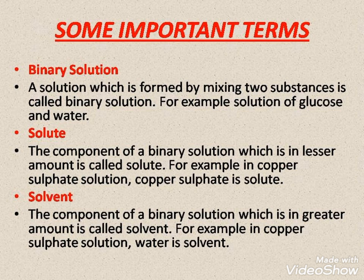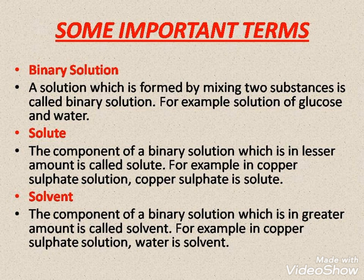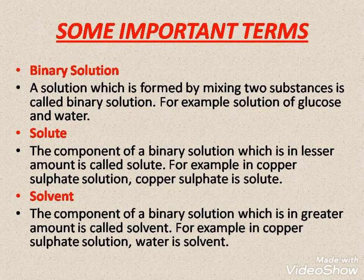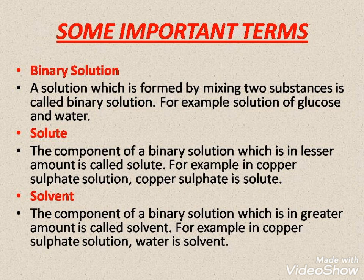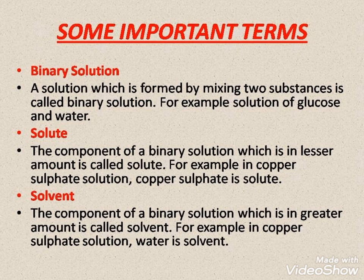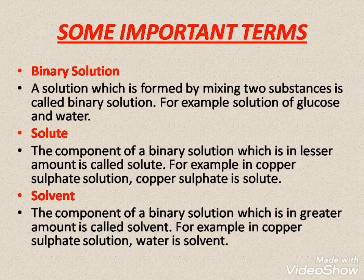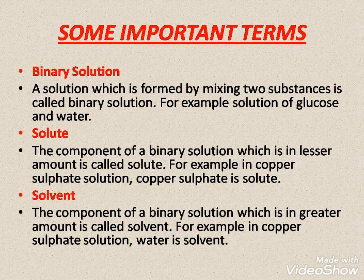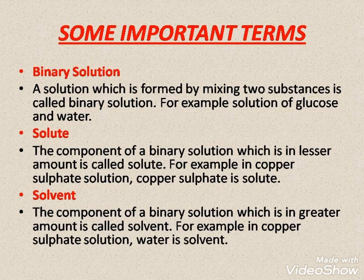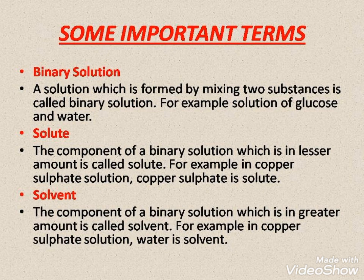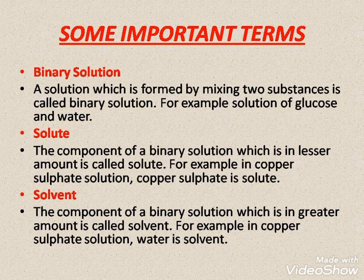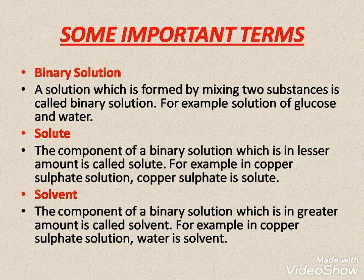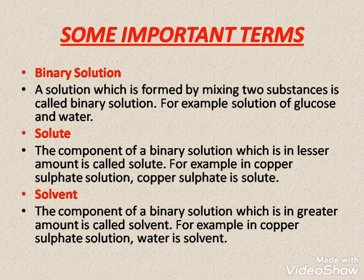Some important terms related to the chapter on solubility. A binary solution is a solution made up of two components — that means by mixing two substances. For example, a solution of salt in water or glucose in water. Every binary solution is made up of two different components: one is a solute and the other is a solvent. The part of the solution which is lesser in quantity is called the solute, whereas the part which is greater in amount is called the solvent.